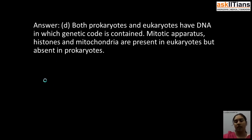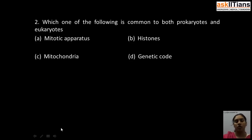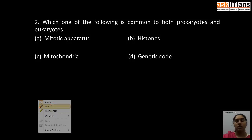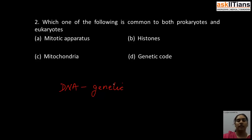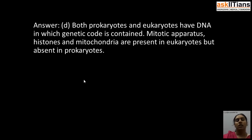Our next question is: which one of the following is common to both prokaryotes and eukaryotes? A) mitotic apparatus, B) histones, C) mitochondria, D) genetic code. The correct answer is D: genetic code. Both prokaryotes and eukaryotes have DNA, and in DNA the genetic code is contained. So genetic code is a characteristic feature of both. Among the other options, mitotic apparatus, histones, and mitochondria are present in eukaryotes but absent in prokaryotes.